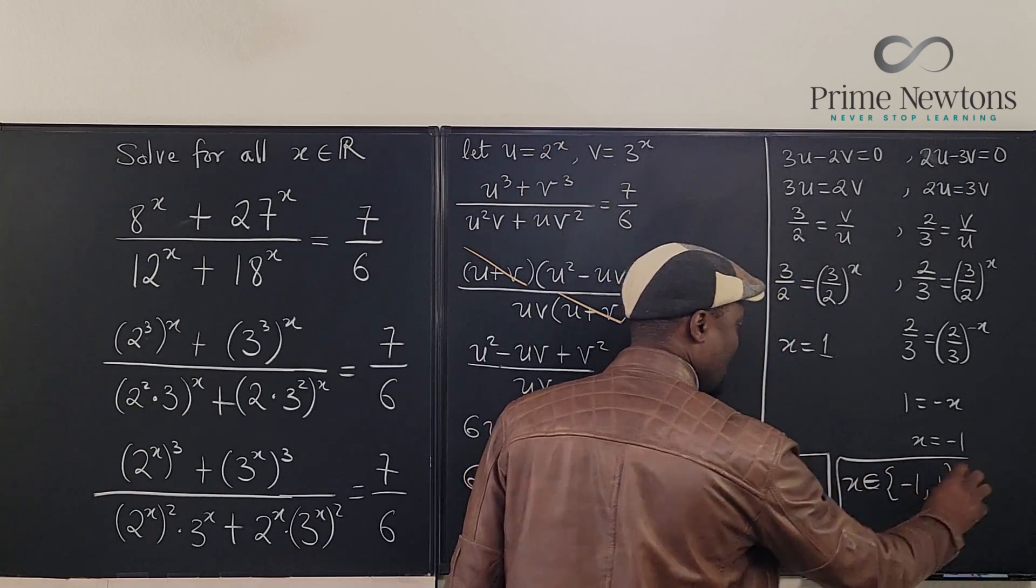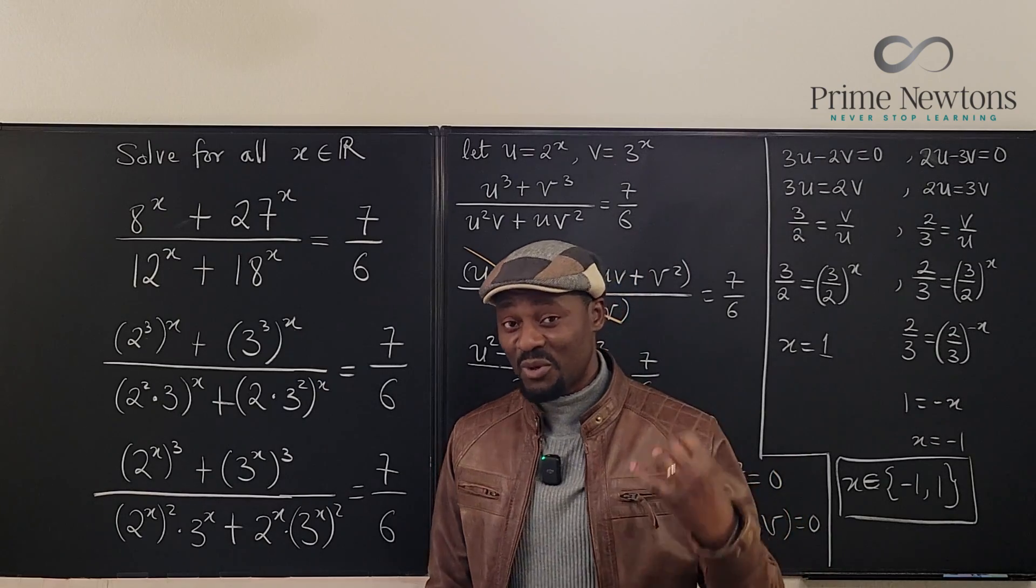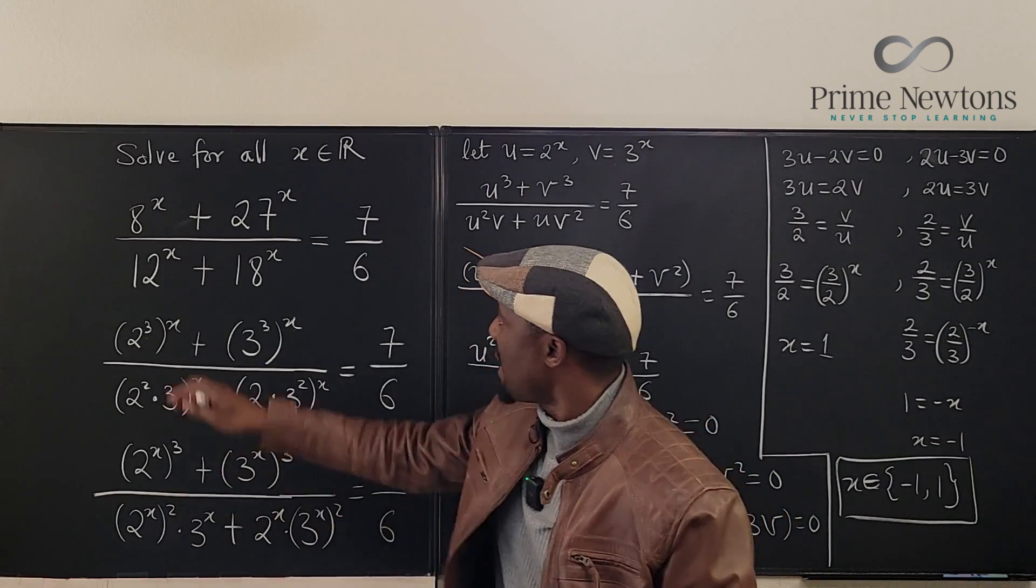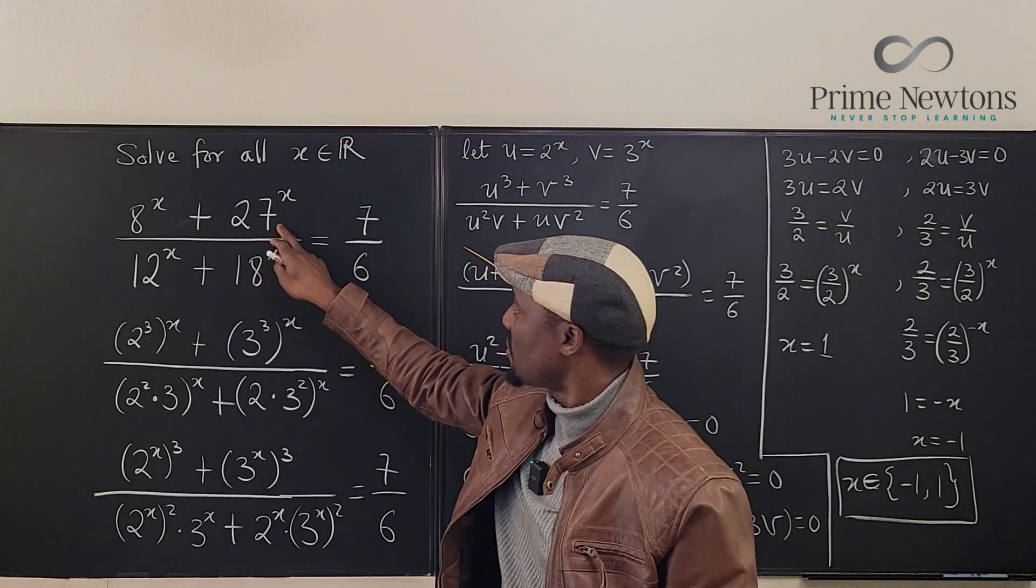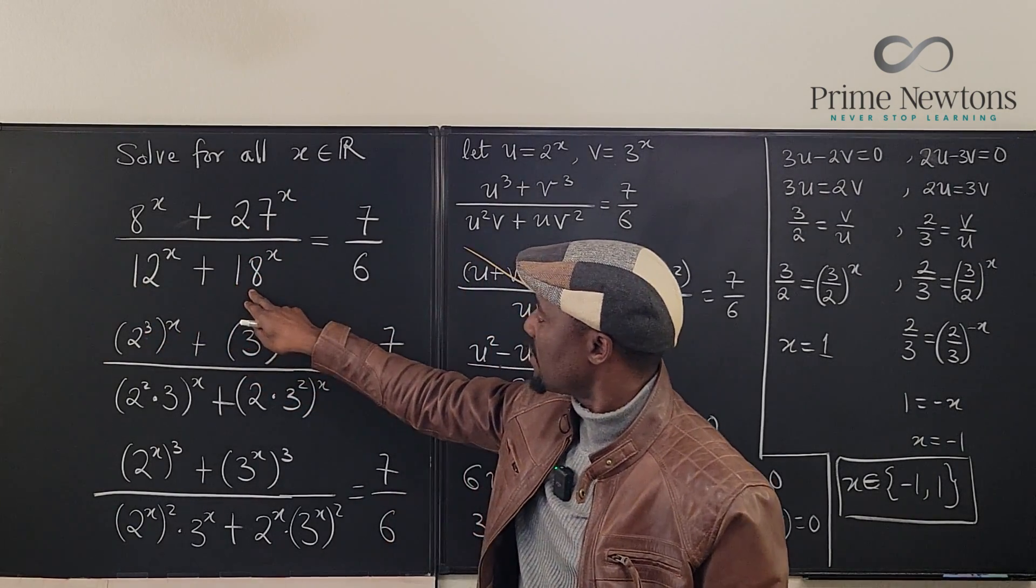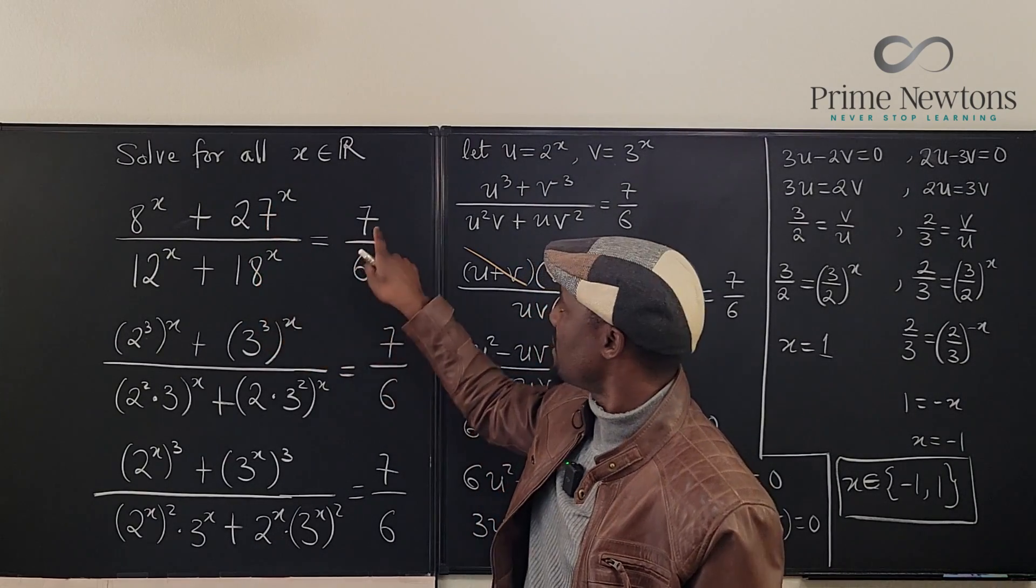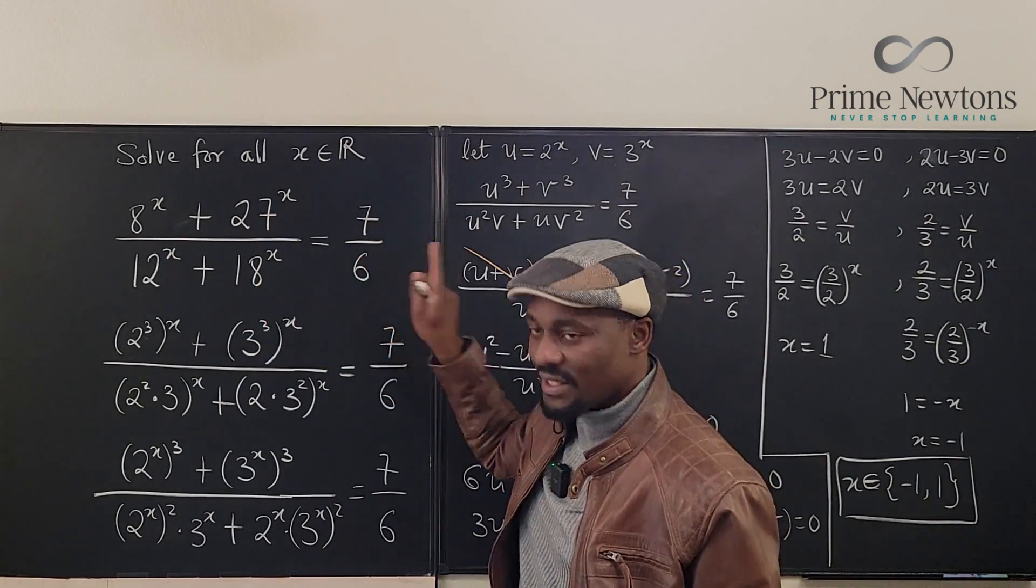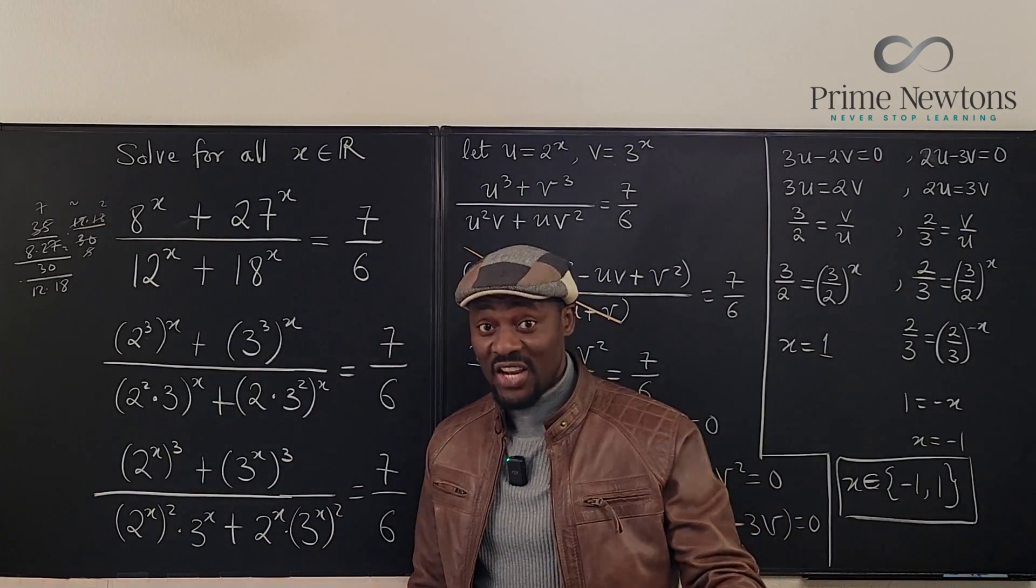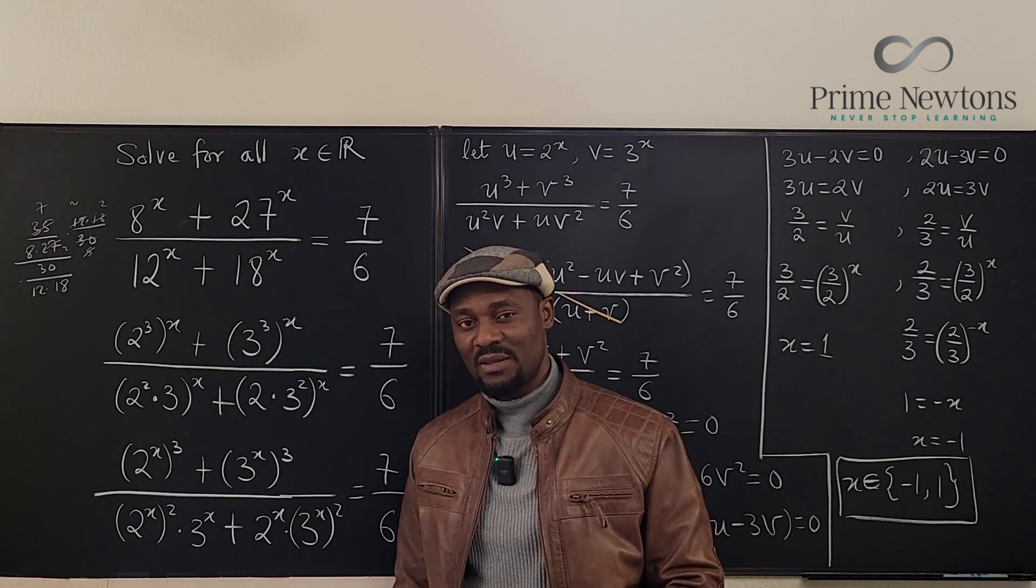Actually, these are the solutions. I'm going to do a quick check to see if my answers are correct. Both 1 and negative 1. Because if it is 1, I have 8 plus 27. That's going to be 35, and this is going to be 12 plus 18. That's going to be 30. 35 over 30 is 7 over 6. That's correct. But if it's negative 1, I checked the answers. They're both correct, both x equals 1 and x equals minus 1.